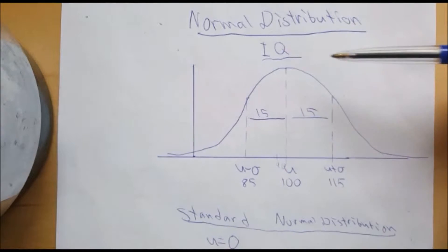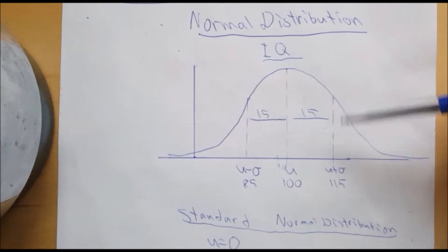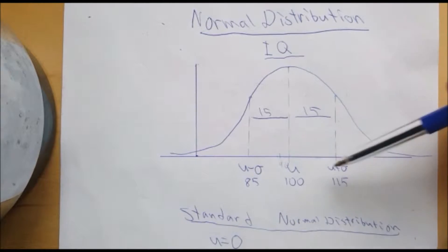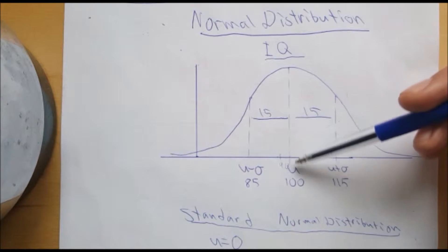The IQ normal distribution curve, for example, like the average IQ in the world is 100.